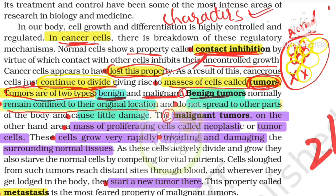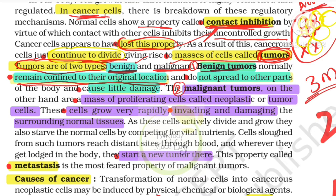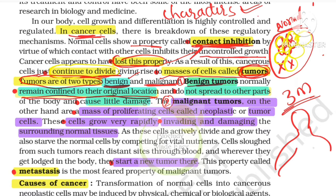There are two types of tumor cells. What is the difference between benign and malignant tumor? First, benign tumor — they remain confined to their original location. For example, in a specific part of the body, cells grow and form a tumor, and that tumor remains confined to its original location.